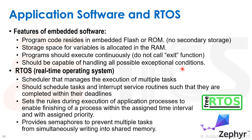A real-time operating system sits between the hardware and embedded programs to help manage them. A scheduler manages the execution of multiple tasks on the hardware, scheduling tasks and interrupt service routines so they complete within their deadlines. It sets the rules for execution priority to ensure processes meet their deadlines, and semaphores prevent multiple tasks from simultaneously writing into shared memory. Two popular open-source real-time operating systems are FreeRTOS and Zephyr.